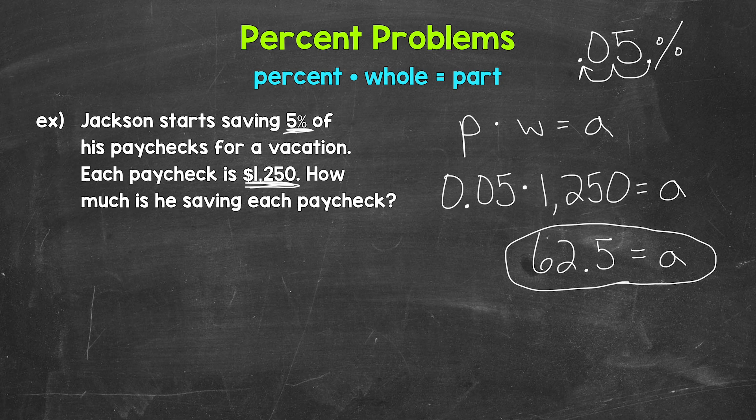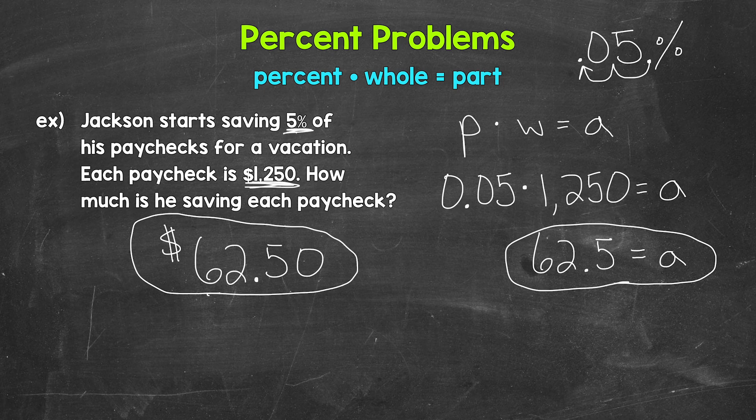Now let's go back to the original question. How much is he saving each paycheck? This is not 62 dollars and 5 cents. Remember, when we write out money that involves cents, we write it to the hundredths place. So this is 62 dollars and 50 cents. That's how much he saves each paycheck.